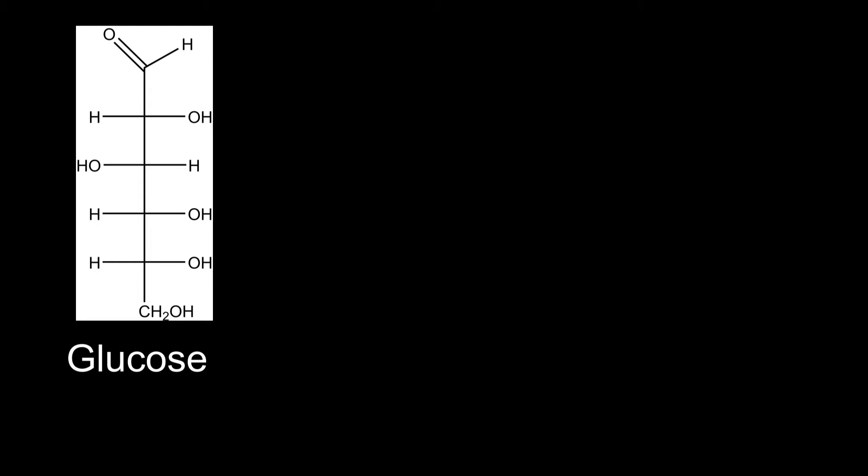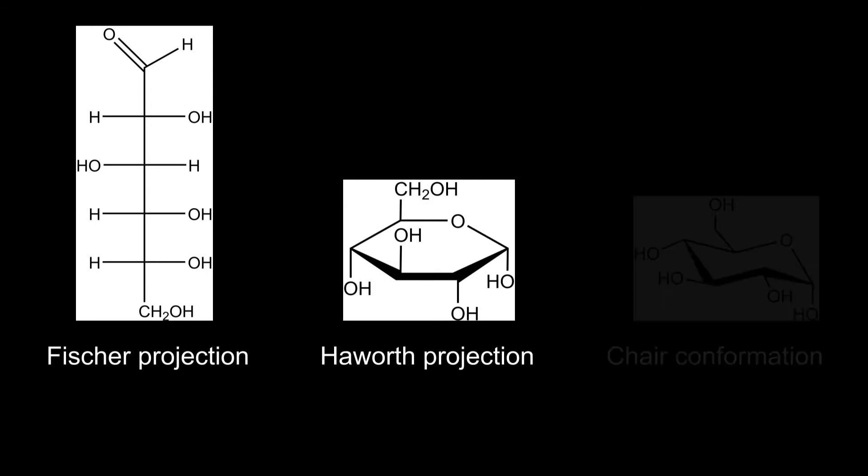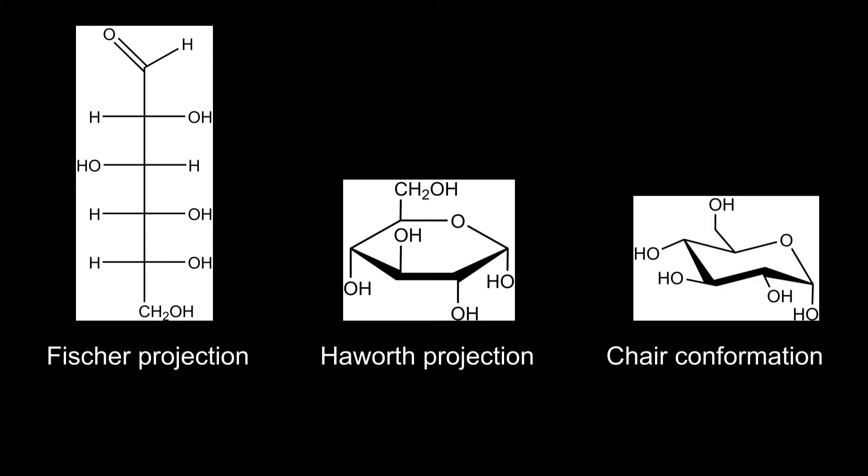Usually three methods are used to display the molecular structure of monosaccharides: the Fischer projection, the Haworth projection, and the chair conformation, where the Haworth projection and chair conformation are often preferred for chemical equations and reaction mechanisms.